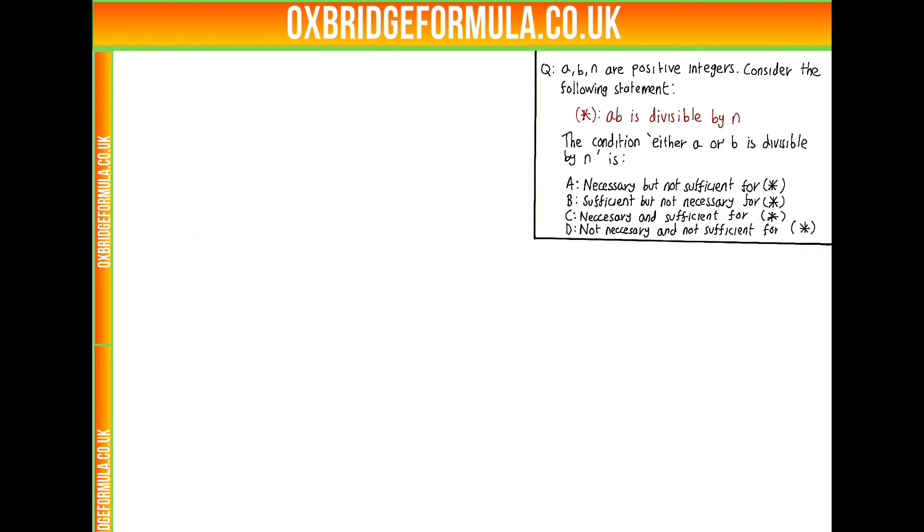So we need to look at sufficiency and necessity in this question. So let's start with sufficiency. Let's suppose A or B is divisible by N. So we're assuming this condition and we're going to have a look if star is true.